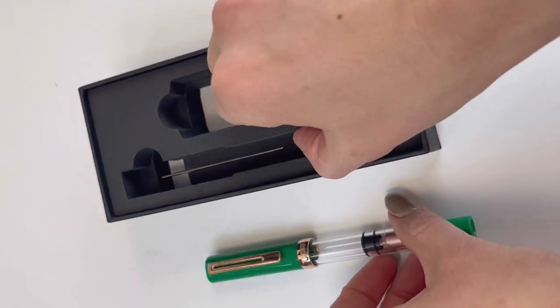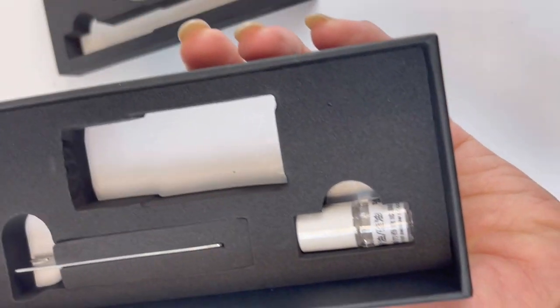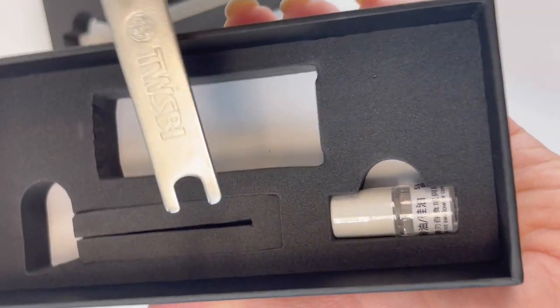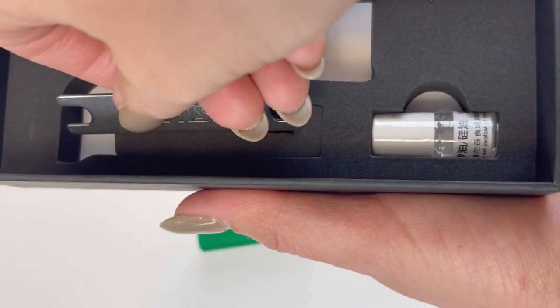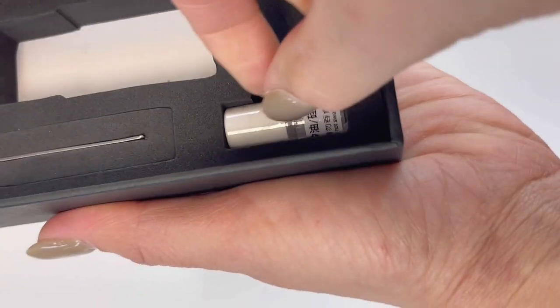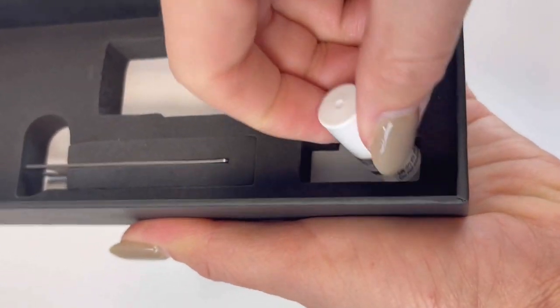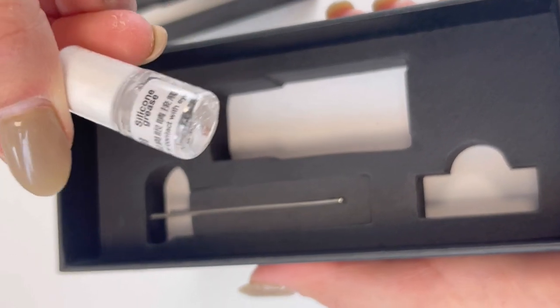Before we take a better look at this Royal Jade Fountain Pen, let's go ahead and remove this top insert, and you can see that's where you can access your tools for maintaining your TWSBI piston filler. It includes both the wrench tool and your silicone grease.